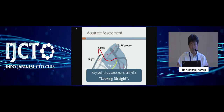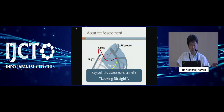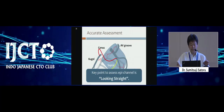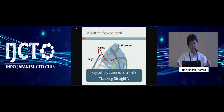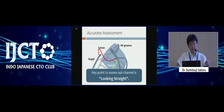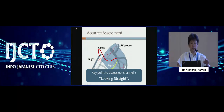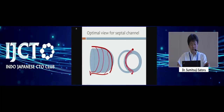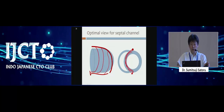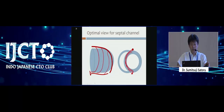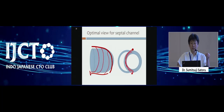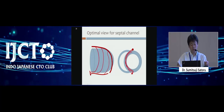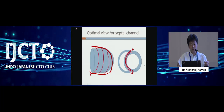For each channel, how to improve the success rate? And how to decrease the trouble? That is based on a nice assessment of the channel. A very important principle is looking straight without overlap. Each channel has a different anatomy, so we must use a different projection angle. Of course, the septal — use the RL view at the beginning to check the basic information with the guiding catheter shot, with the RL. Not the LL, because in LL many septals overlap.